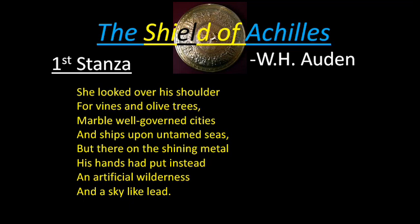The Shield of Achilles by W.S. Auden — First Stanza: 'She looked over his shoulder for vines and olive trees, marble well-governed cities, and ships upon untamed seas. But there on the shining metal his hands had put instead an artificial wilderness and a sky like lead.'